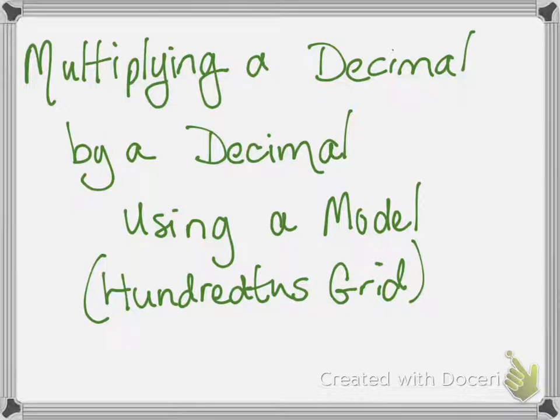This is the tutorial for multiplying a decimal by a decimal using a model. We're going to be using the hundredths grid again. We used that with decimal by a whole number, but this is a little bit different when we have a decimal by a decimal.